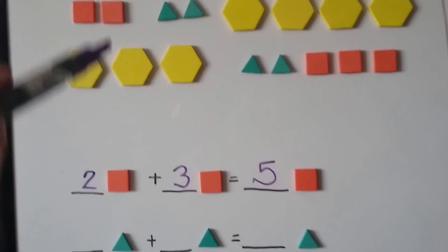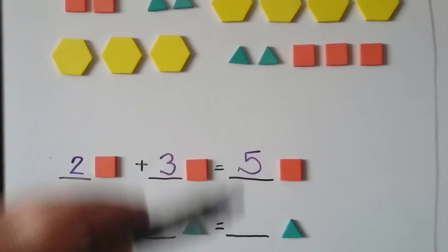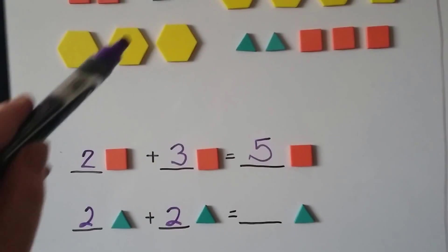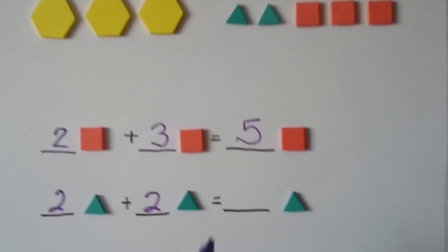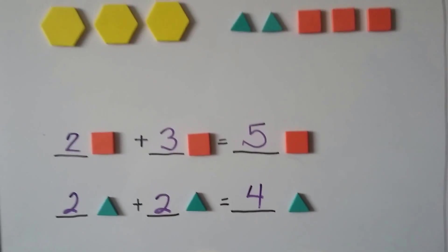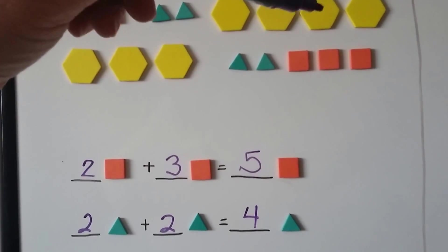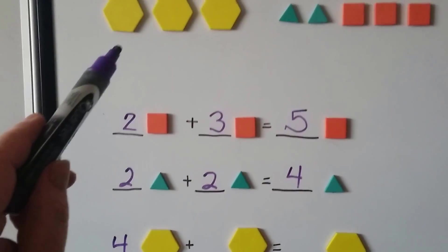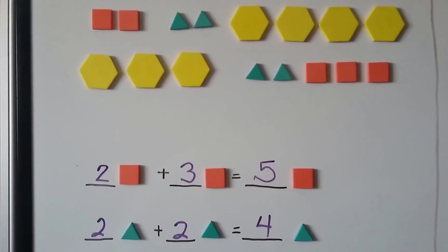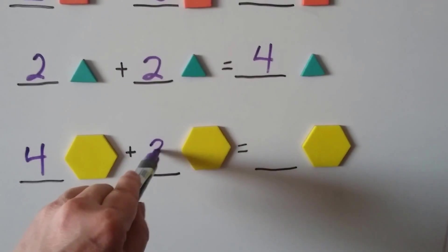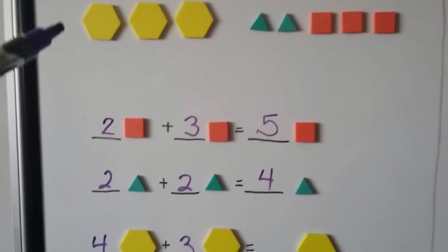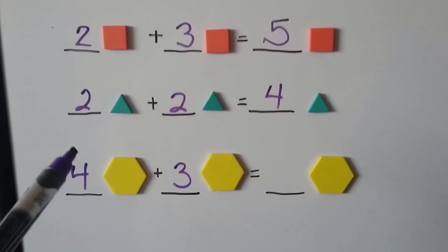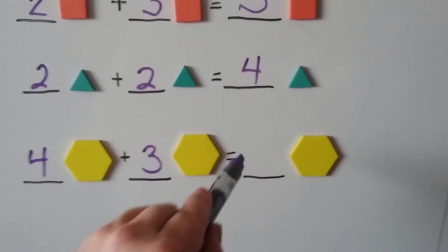Now look at the green triangles. We have one, two here and one, two here. Two green triangles and two more green triangles makes one, two, three, four green triangles. Look at the yellow hexagons: one, two, three, four up here and one, two, three here. We count them all together: one, two, three, four, five, six, seven. Four plus three is equal to seven.